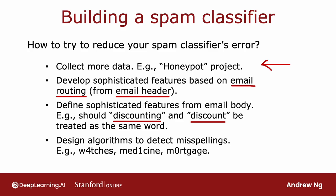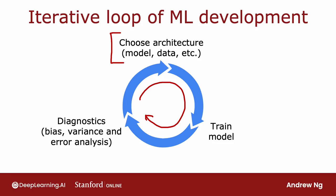Returning to this list: a bias-variance analysis should tell you if collecting more data is helpful or not. Based on our error analysis, more sophisticated email features could help but only a bit, whereas more sophisticated features to detect pharma spam or phishing emails could help a lot, and detecting misspellings would not help nearly as much. I've found both the bias-variance diagnostic and error analysis to be really helpful for deciding which changes to the model are more promising to try.